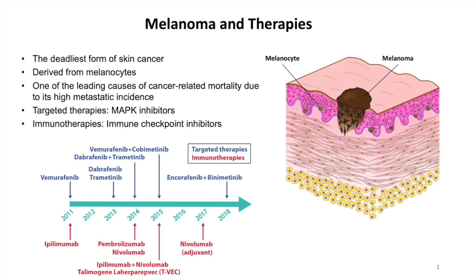Melanoma is the deadliest form of skin cancer that is derived from melanocytes. Current treatments for melanoma patients include targeted therapies that target the MAP kinase pathway and immunotherapies that target immune checkpoints. However, none of these therapies are able to achieve a durable response in all groups of patients.